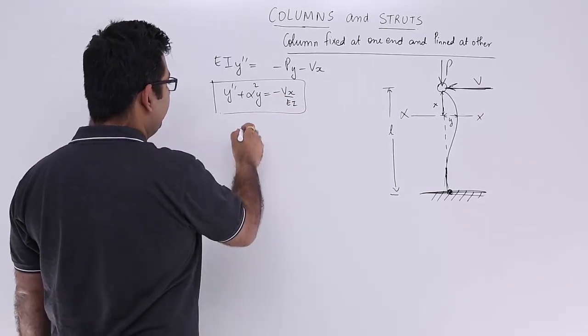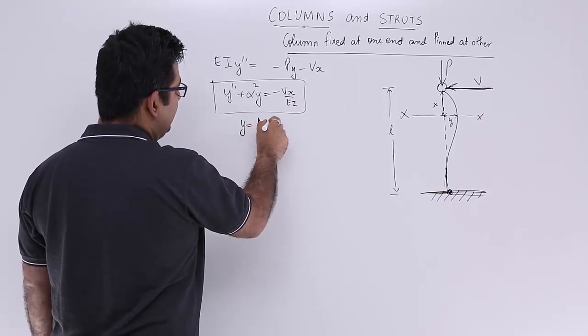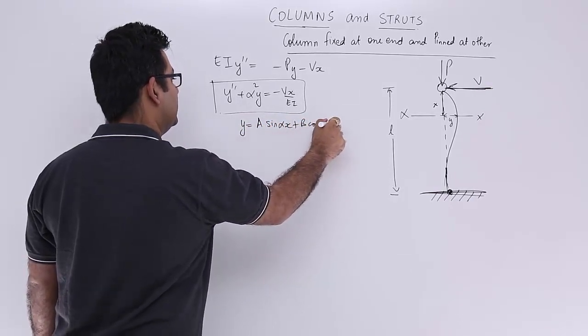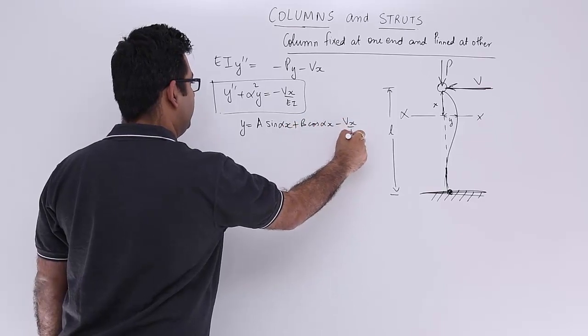So resolving this will give you the value of y as a into sin alpha x plus b into cos alpha x minus vx upon p.